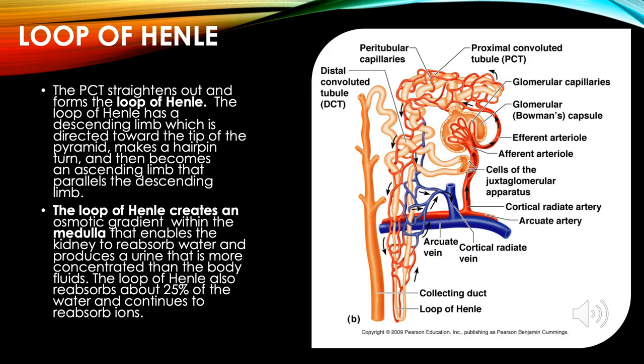The proximal convoluted tubule straightens out and forms the loop of Henle. The loop of Henle has a descending limb directed toward the tip of the pyramid, makes a hairpin turn, and then becomes an ascending limb that parallels the descending limb. The loop of Henle creates an osmotic gradient within the medulla that enables the kidney to reabsorb water and produce urine more concentrated than body fluids.